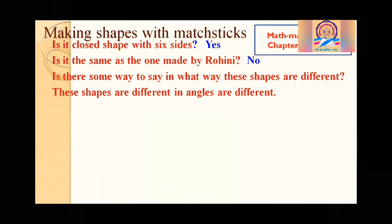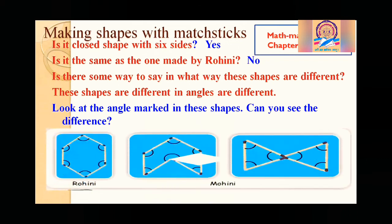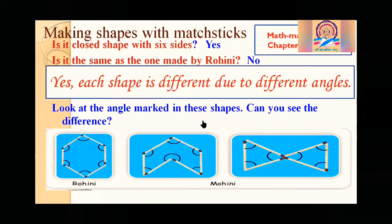Okay, these shapes are different in angles. So angles are different. Okay, so angles are different because one side's angle with another side in different way. Okay, in some way like this, some way this. So angles are different. So angles are different. Look at the angles. Look at the angles marked in these shapes. Can you see the difference? Look at this. Yes. Now see this. These are angles marked. Okay. Can you see the difference? Yes. Each shape is different due to angles. These angles. No, these angles are different. So shapes are different.